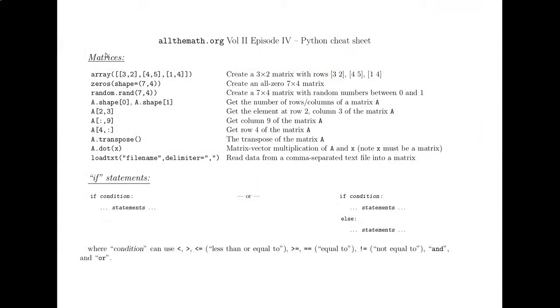There are other ways to make matrices. We have the zeros function we talked about before. Shape is something that the NumPy package lets us use to specify the shape of the matrix. So we know we want an all-zero matrix if we're calling zeros. This tells us we want it to be seven by four. The parentheses indicate that this is a tuple, and that tuple is telling us what the dimensions are of the matrix we want. Similarly, we can use random dot rand, which will give us a matrix with random entries between zero and one, specifying the dimensions of the matrix.